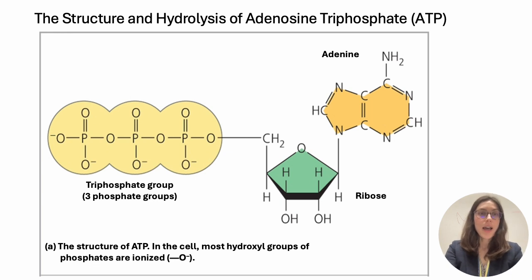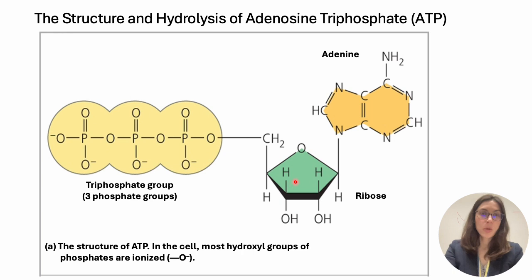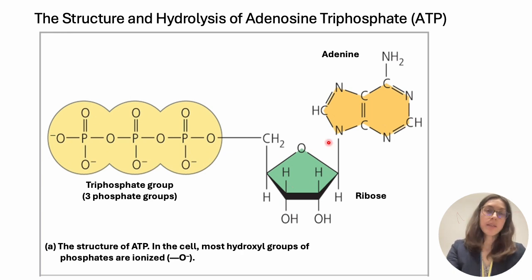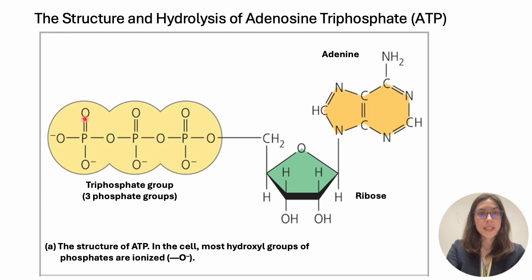ATP has a structure that includes a ribose sugar, adenine, a nitrogenous base. These two parts are ones you would find in an RNA nucleotide. And there is not just one, but three phosphate groups. So when the molecule looks exactly like this, it is called adenosine triphosphate — the three phosphates.